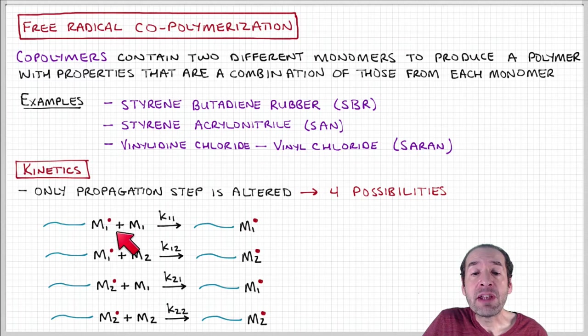Before we had one possibility: a growing chain, an active chain with this radical active site indicated by the red dot, adds a monomer with some rate constant, the propagation rate constant, to form another growing chain where its length is increased by one monomer unit.